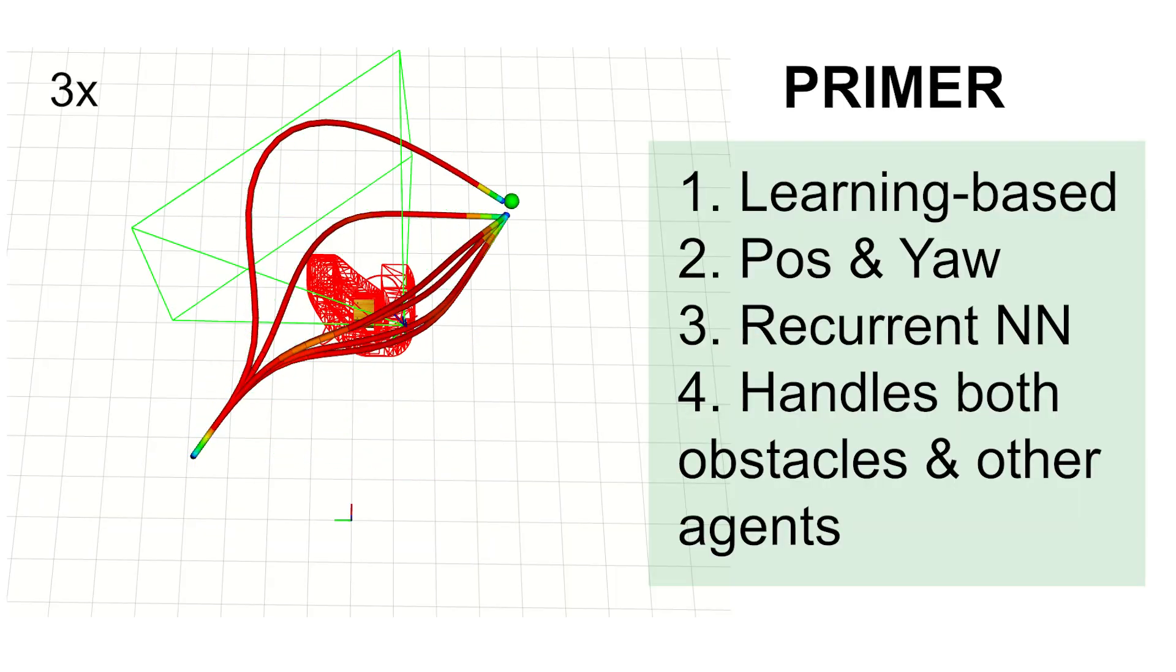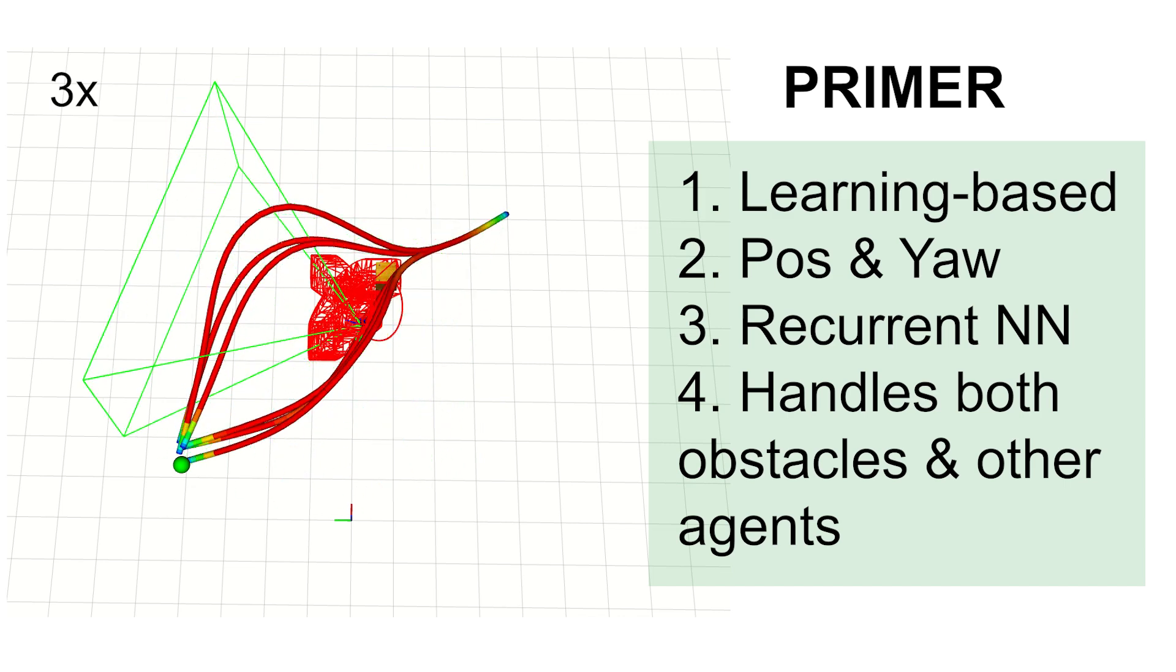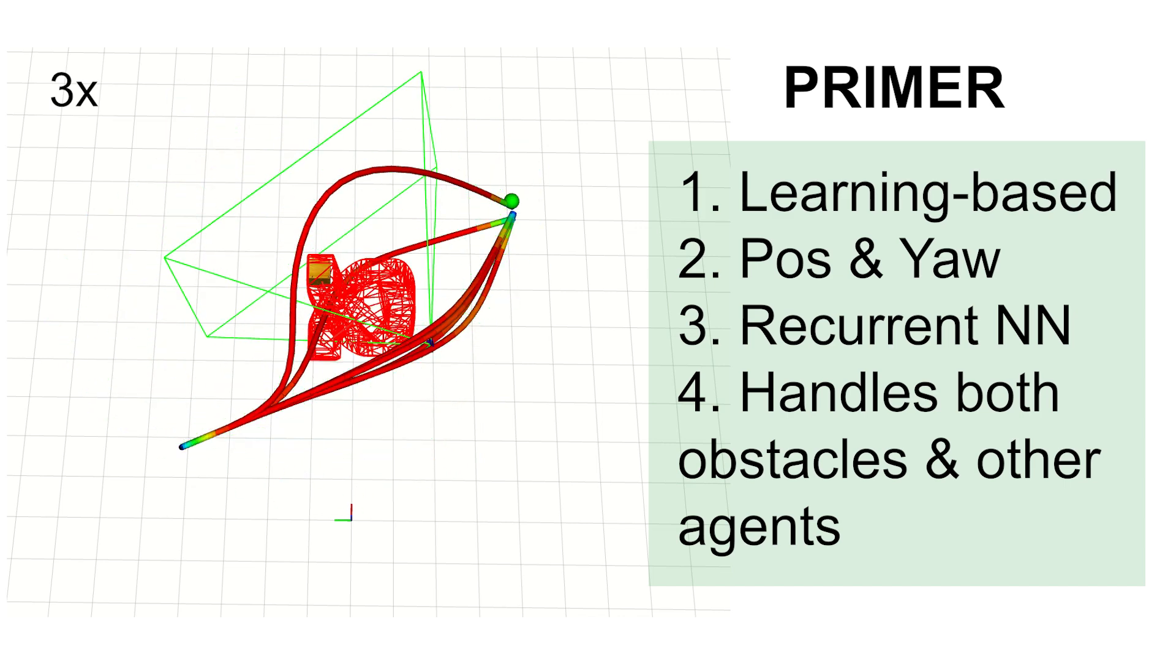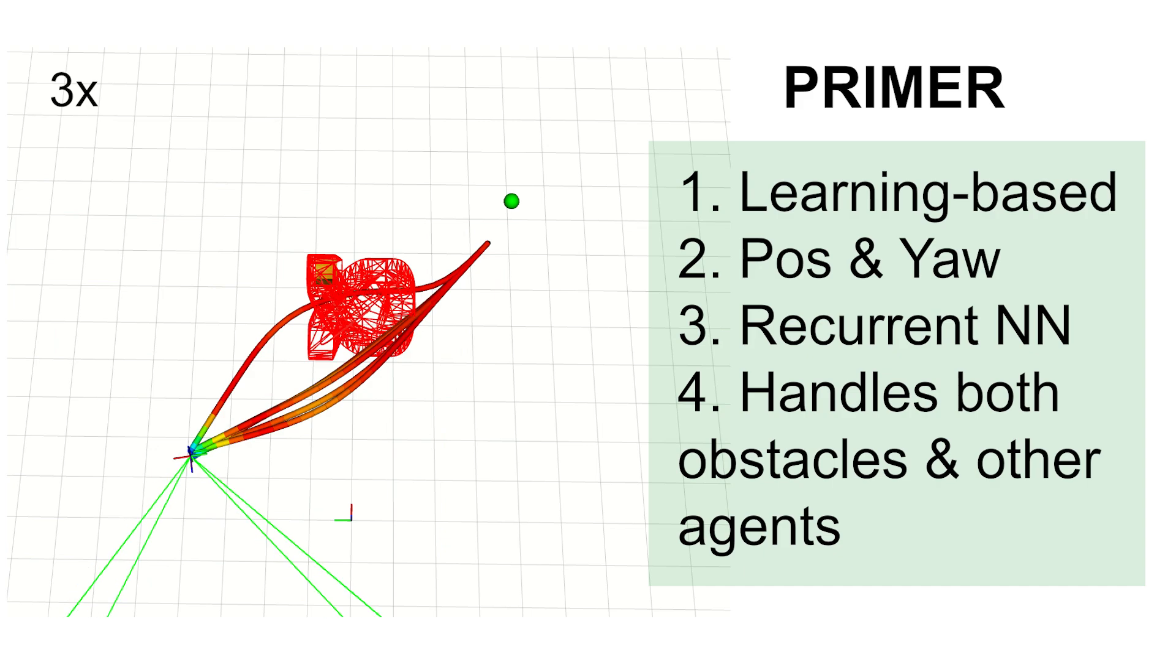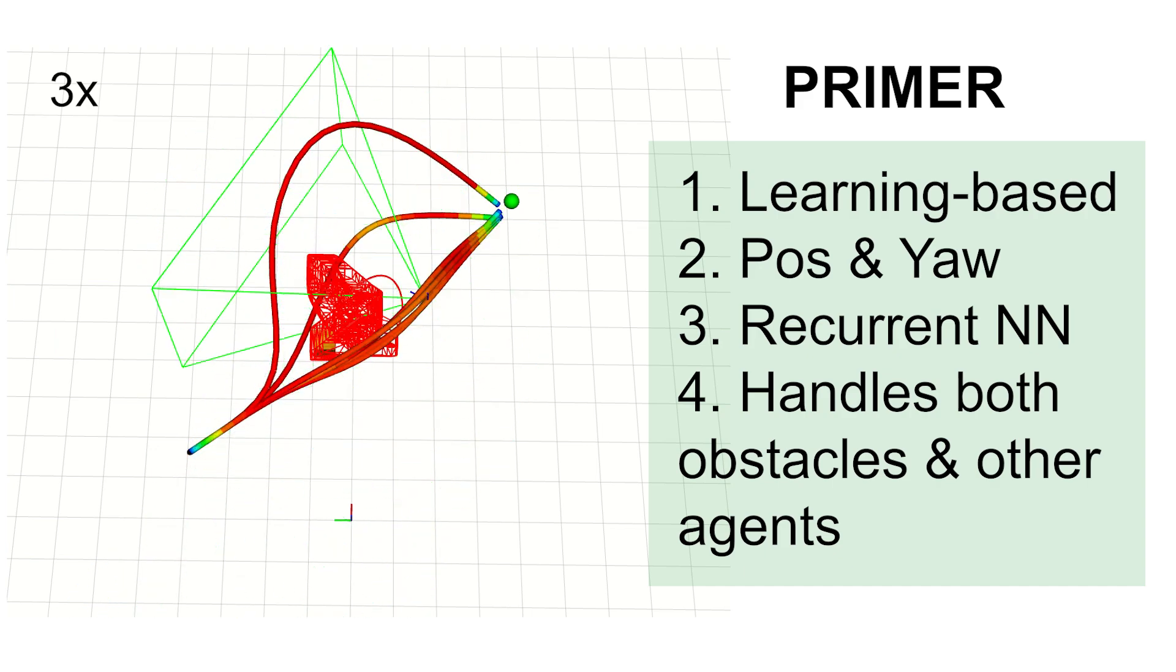Primer is a learning-based method that generates both position and yaw trajectories using a recurrent neural network, specifically an LSTM. Primer can avoid and track both dynamic obstacles and other agents.